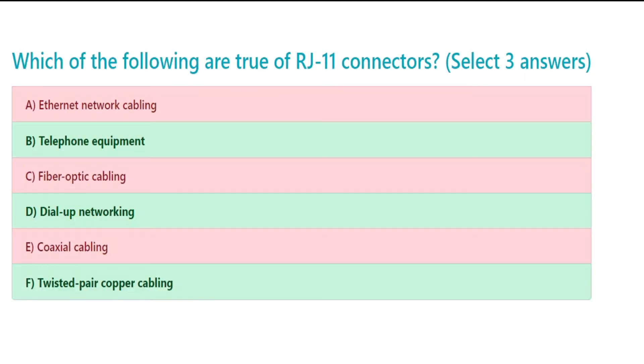The correct answers are B. Telephone equipment, D. Dial-up networking, and F. Twisted pair copper cabling.